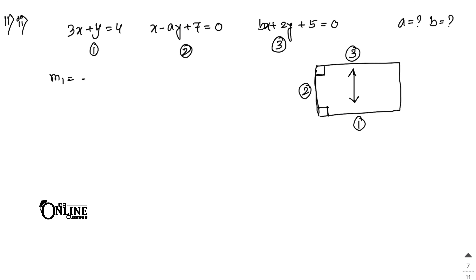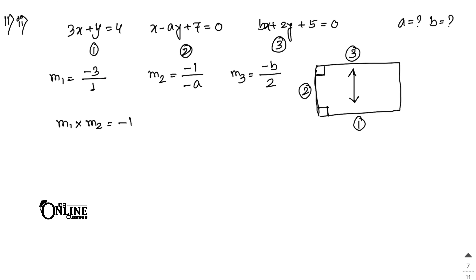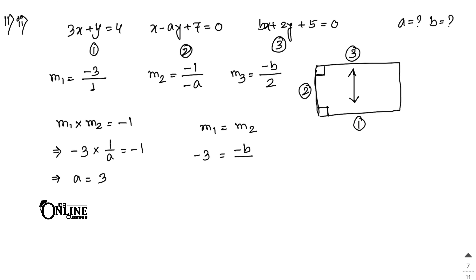The slope of line 1 is minus 3, the slope of line 2 is 1/a, and the slope of line 3 is minus b/2. Since lines 1 and 2 are perpendicular: (minus 3)(1/a) equals minus 1, giving a equals 3. Since lines 1 and 3 are parallel: minus 3 equals minus b/2, giving b equals 6.